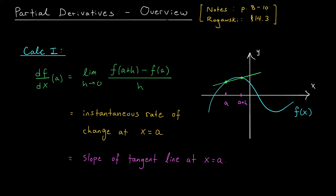Of course, we're not really interested in this second point. We want to know how quickly our function is changing at x equals a. So we let the distance between these points get smaller and smaller. As the distance h decreases, we're measuring the slopes of these lines shown in green. These slopes are approaching the slope of this pink line, the tangent line at x equals a. When we take the limit as h goes to zero, we get the slope of this tangent line, which we define to be the derivative of our function at x equals a. It's denoted by df over dx at a — it's the instantaneous rate of change at this point.